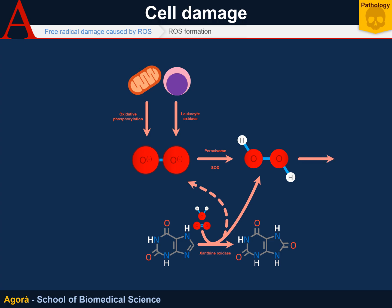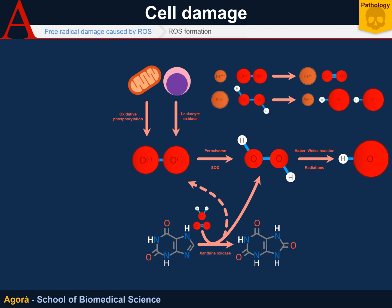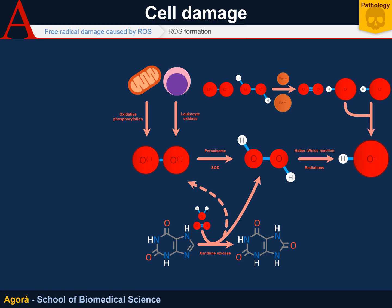Hydrogen peroxide becomes almost spontaneously hydroxyl. This phenomenon is favored by radiation, but also by the Haber-Weiss reaction. Normally, with iron in a state of ferric oxidation, the superoxide anion can be converted into a simple molecule of oxygen, with a reduction of iron to ferrous iron. But by reacting with hydrogen peroxide, ferric ion can oxidize and form two hydroxyl radicals. Simply put, in the Haber-Weiss reaction, from one molecule of superoxide and one of hydrogen peroxide, one molecule of oxygen and two hydroxyl radicals are obtained, occurring through the reduction of iron and its consequent reoxidation.